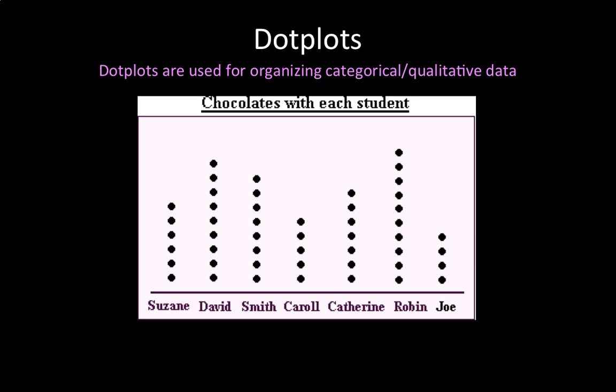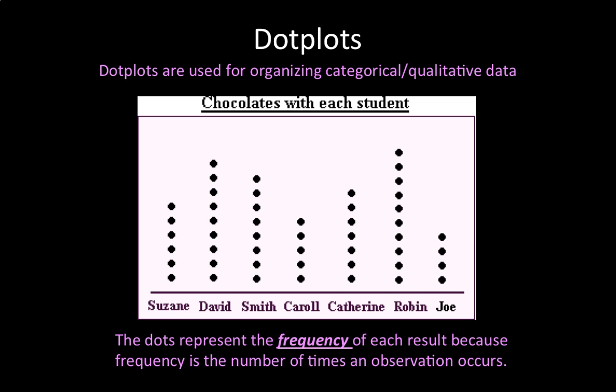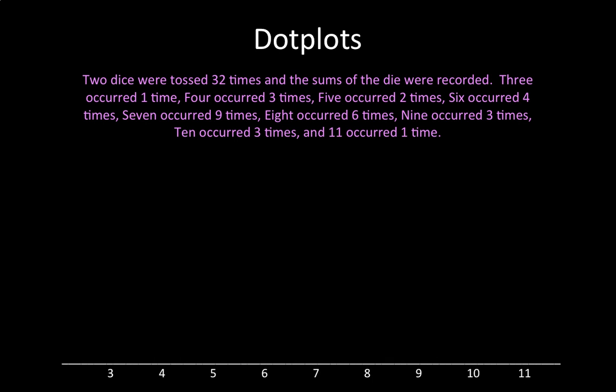So the important thing to remember about dot plots is that the dots represent the frequency of each result, because frequency is the number of times an observation occurs. Okay, so now let's try making a dot plot on our own.